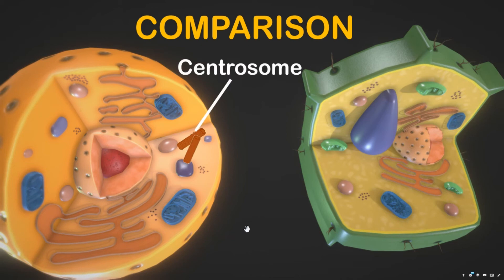Lastly, we have the centrosome. The centrosome is a microtubule-organizing center found near the nuclei of animal cells. It contains a pair of centrioles — two structures that lie perpendicular to each other. The centrosome replicates itself before a cell divides, and the centrioles appear to have some role in pulling the duplicated chromosomes to opposite ends of the dividing cell. However, the exact function of the centrioles in cell division is not entirely clear, because cells that have had centrosomes removed can still divide, and plant cells — which lack centrosomes — are also capable of cell division.